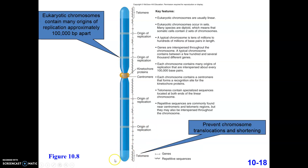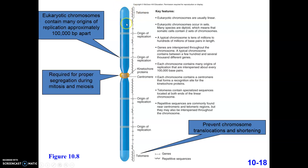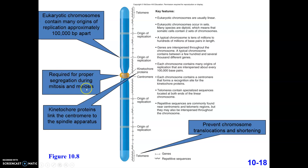We have the telomeres, which prevent this DNA strand from shortening. The fact that you have a loose end creates a replication problem, which we'll discuss in detail later, but the telomeres help prevent that. The telomeres have a lot of repetitive DNA sequences and bind a slew of different proteins involved in binding the chromosome for segregation during mitosis and meiosis. This is facilitated by kinetochore proteins, which bind into the centromere region.